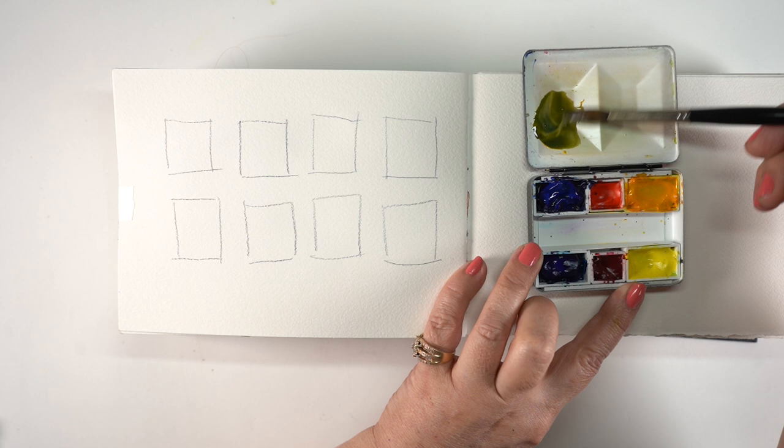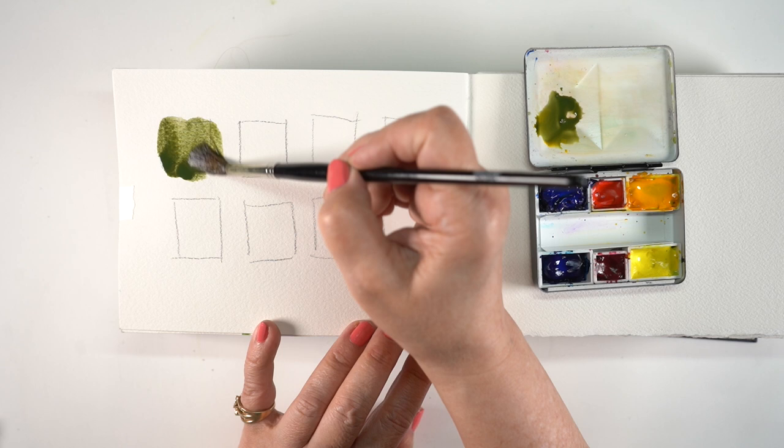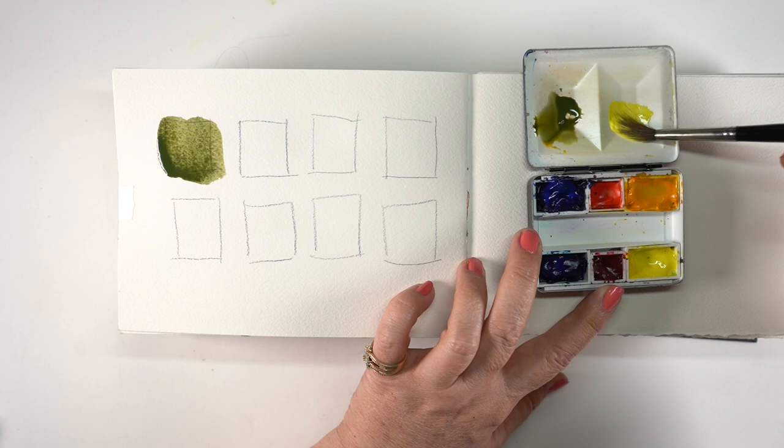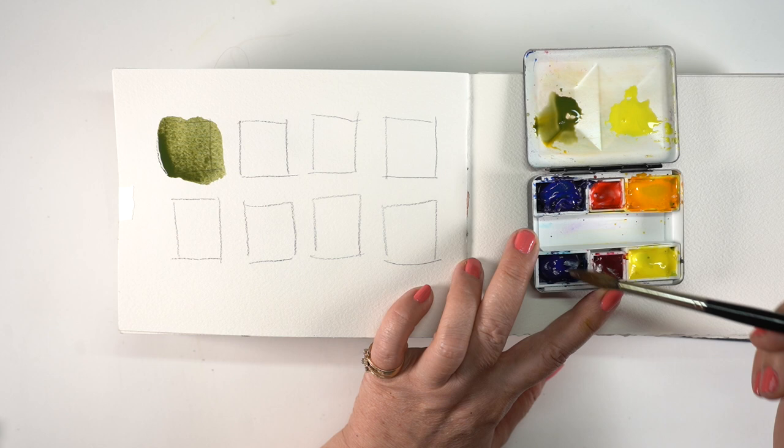If I switch out and make a cool yellow and mix that with a cool blue, and in this case this phthalo blue is really strong so don't use much of it when you're doing mixes with it, I get a cool green.